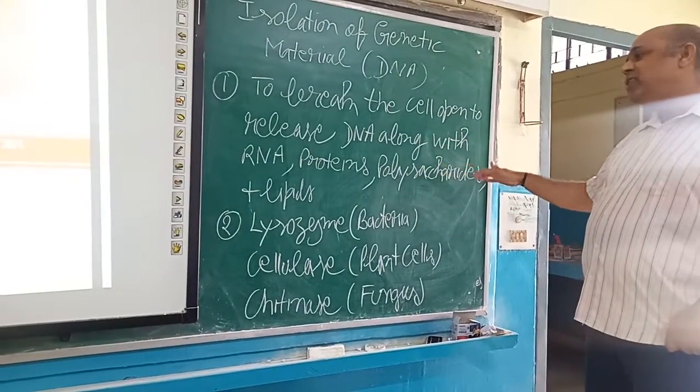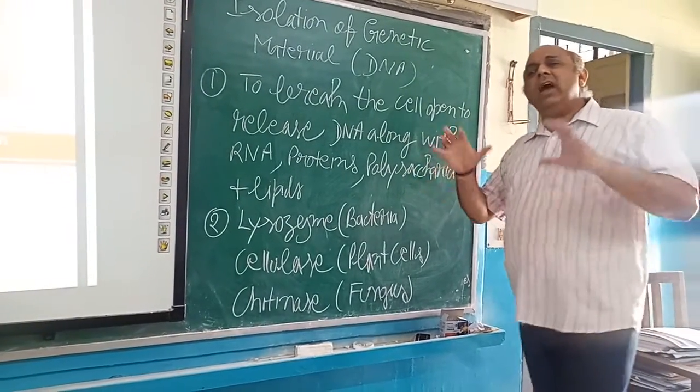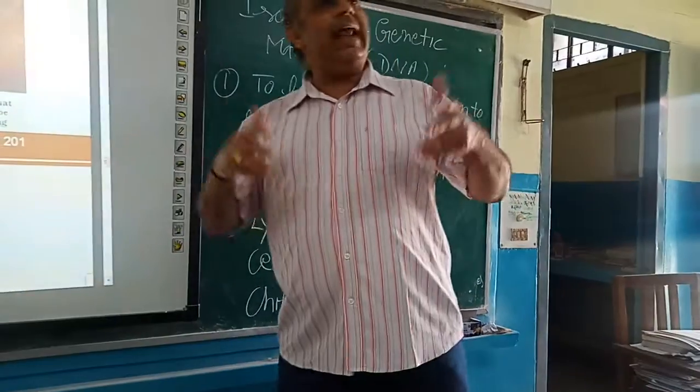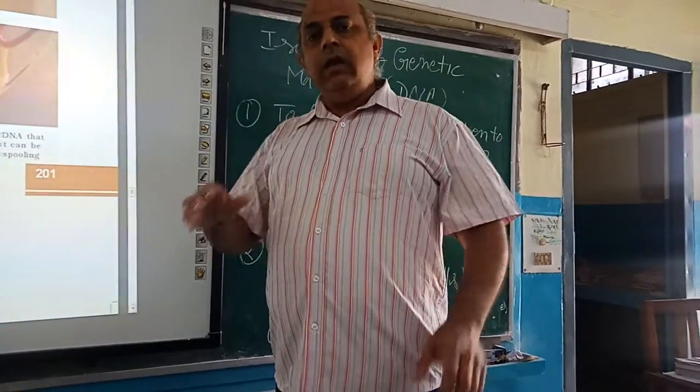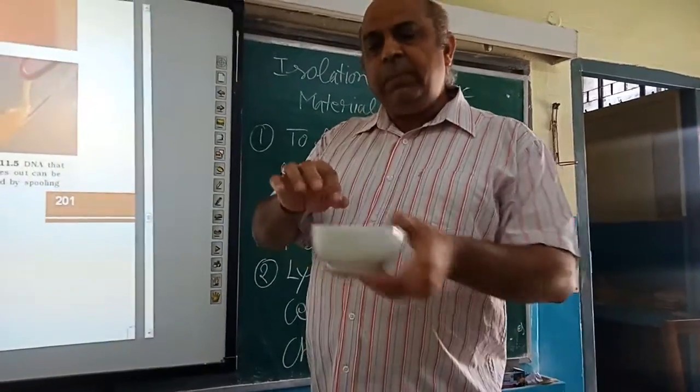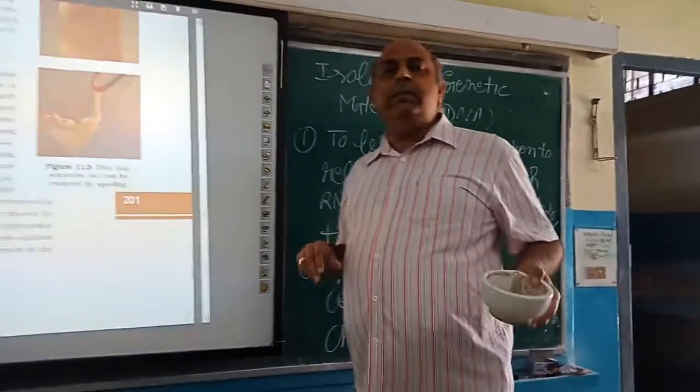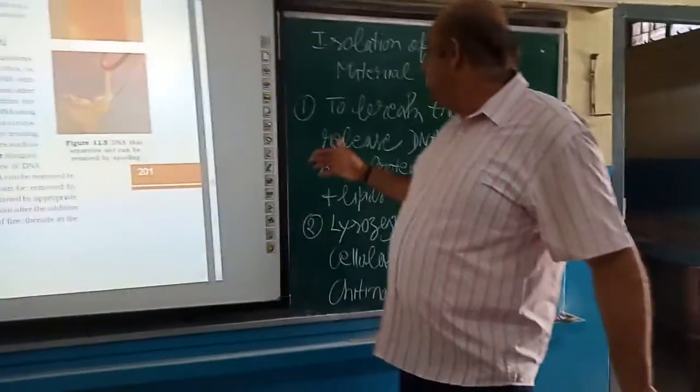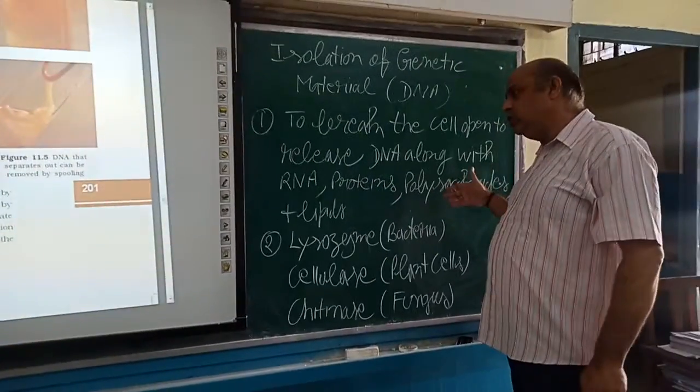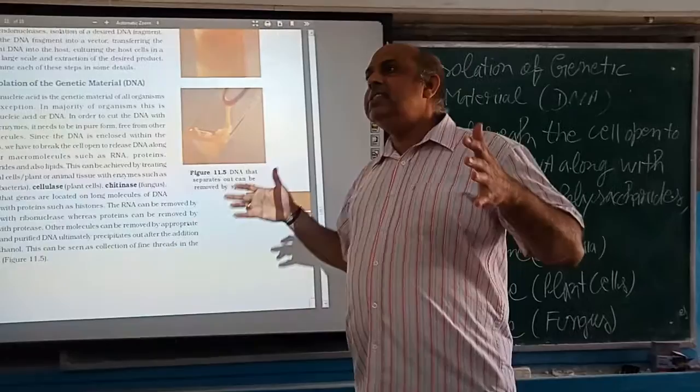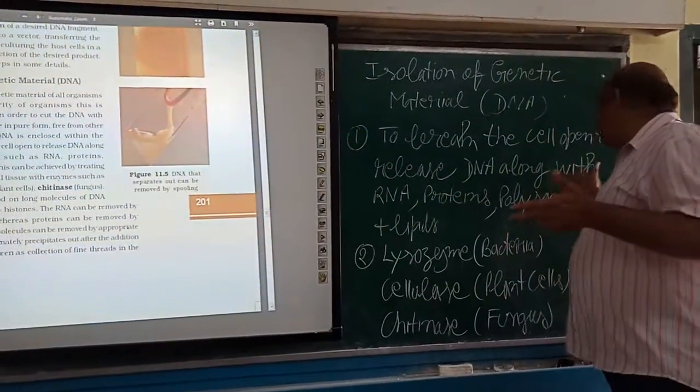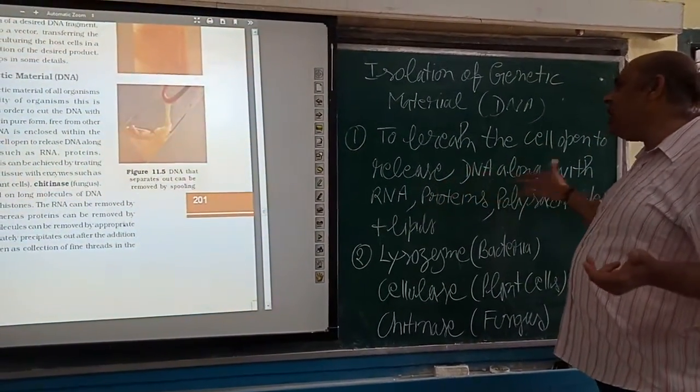RNA, proteins, polysaccharides, lipids, they are the other polymers which are naturally present inside the cell. Then we have to remove them. The next step is to remove these polymers which are not required.